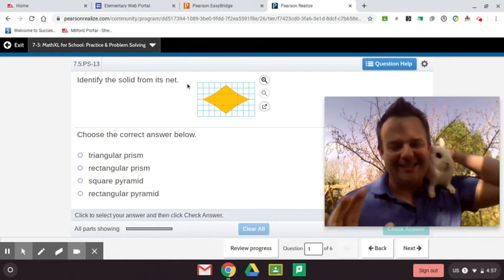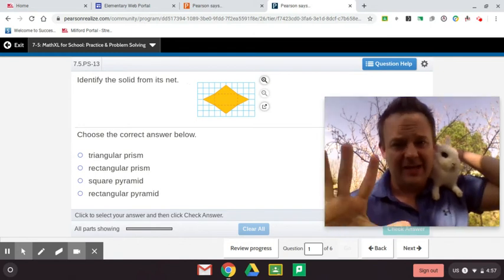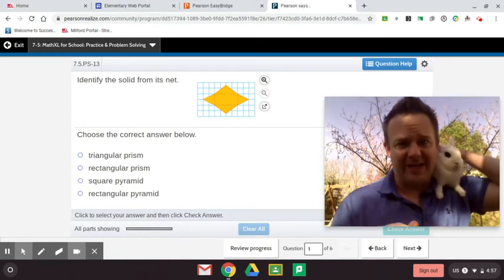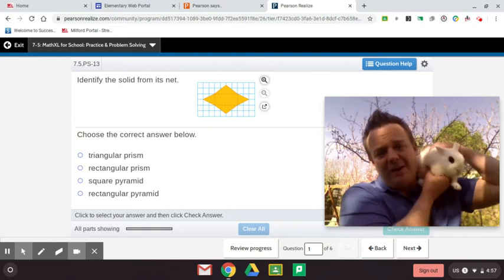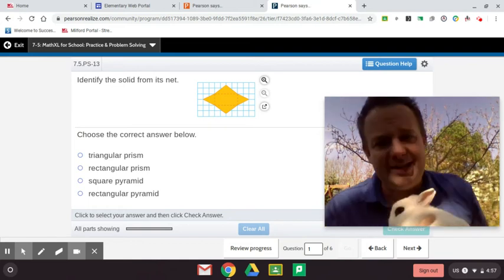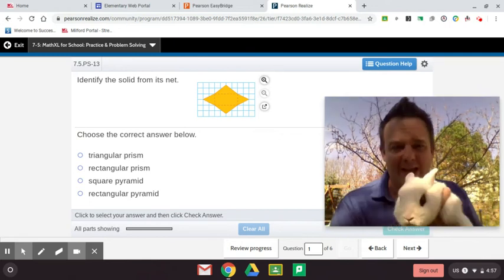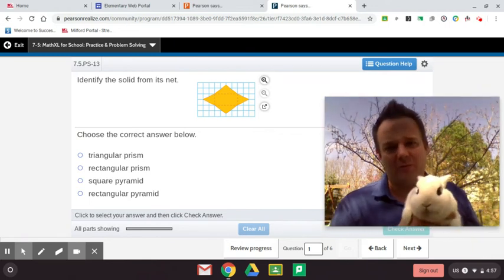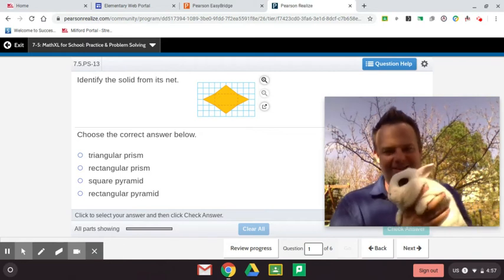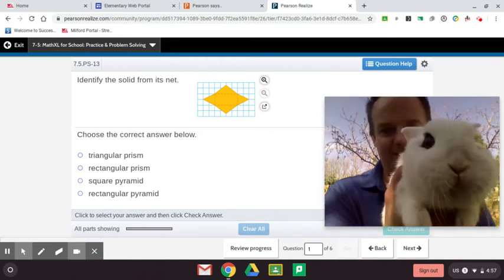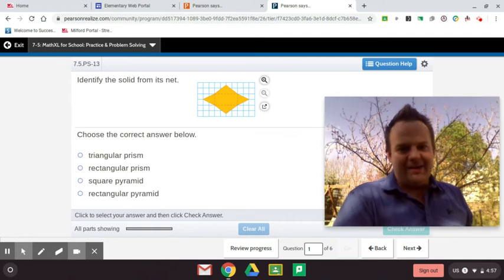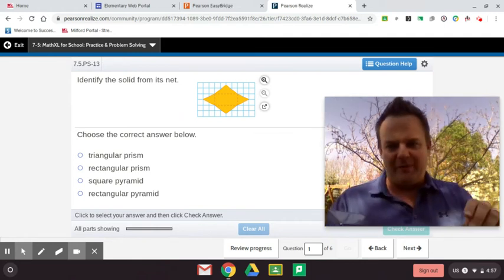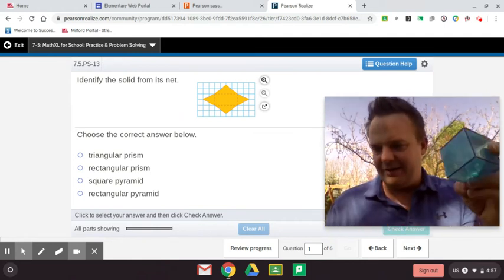Before we begin, stick around because number five is worth the price of being here, which is free. I've got some great tips and insight that you'll use the rest of your life. Let's get our math work done. Identify the solid from its net. Well, before we start, these right here are prisms.